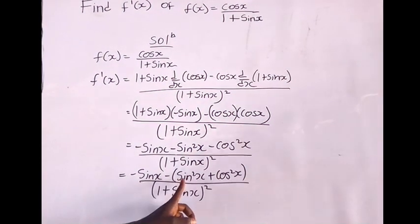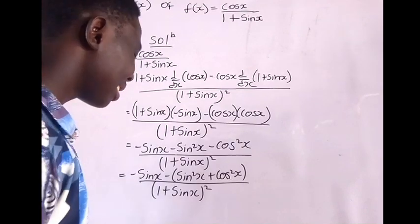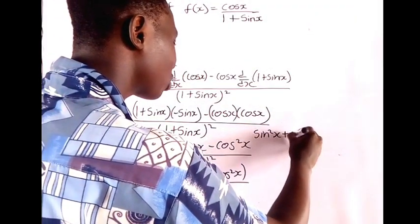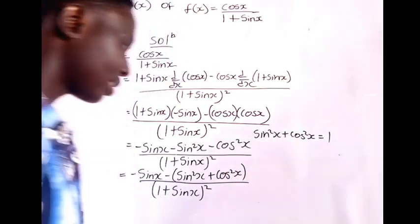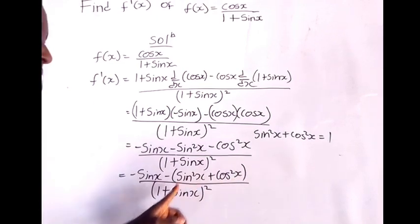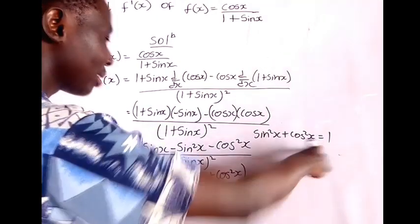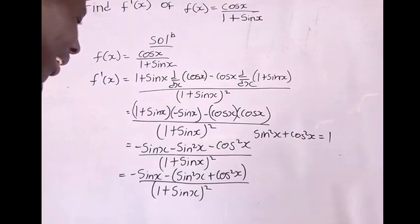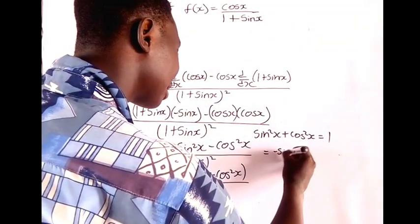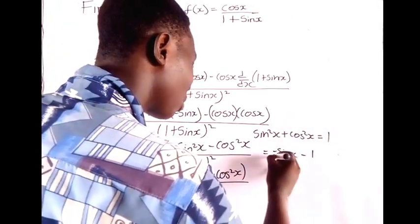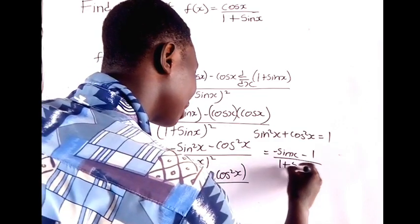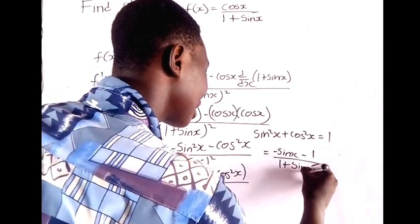We have the Pythagorean identity which states that sin²x + cos²x = 1. Comparing this identity to what we have here, it means that sin²x + cos²x equals 1, so we can write this as −sin x − 1, all over (1 + sin x) squared.